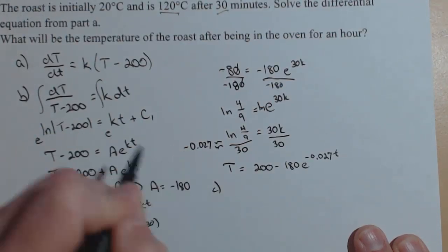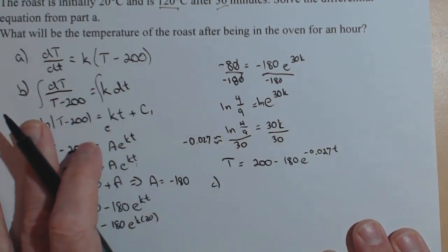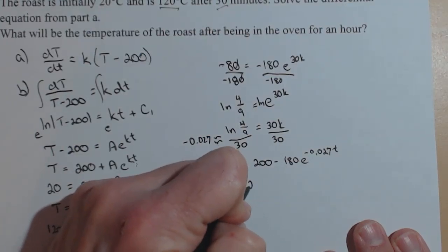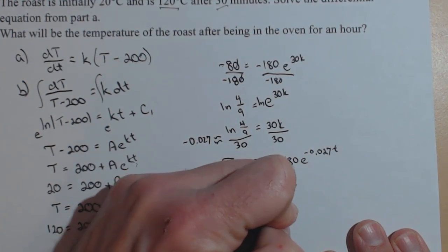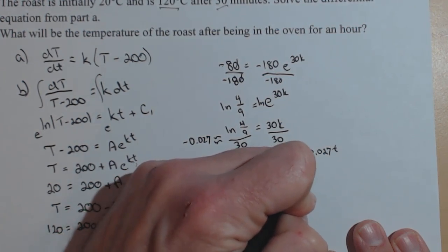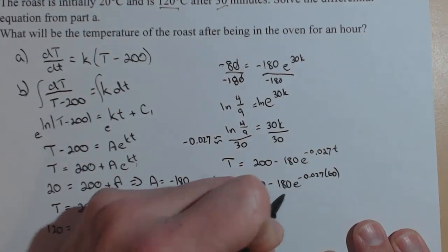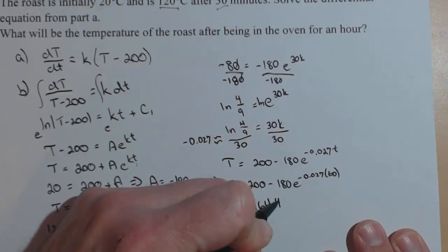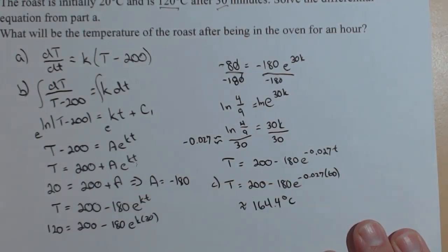Finally, Part C: we want the temperature after being in the oven for an hour. We've done the whole problem in minutes, so T is automatically in minutes. When we go to compute the temperature, we need to put in 60 for an hour because we're looking at 60 minutes. Calculating this gives us about 164.4 degrees, and this problem was done in Celsius.